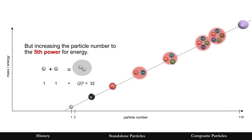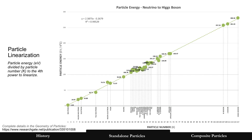It probably looks something more like this: you take two of the smallest particles together — a particle count of two — but the energy is raised to the fifth power, so the result is 2⁵ = 32. You can see the huge discrepancy between the smallest particle and the largest, which is the Higgs. That discrepancy is greatly simplified by taking things to the fifth power. Could they then be linearized? The answer is yes — it looks like this when you take it to the fifth power. The math is documented in a paper whose URL is provided in the description.